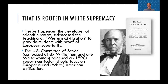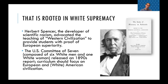In the United States, there was something called the Committee of Seven, which was led by six white men and one white woman. They released in the 1890s a report that the curriculum should focus on European and white American civilization. And so to this day, some of the units that we organize history classrooms around, especially here in the United States, were decided by these groups.